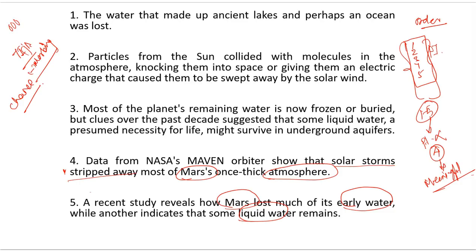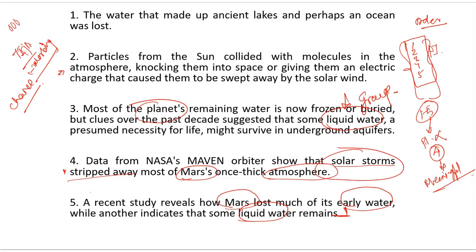So some sentences can be grouped. Mars lost its atmosphere, storm happened, water discussion continues. Number two says: 'Particles from the sun collided with molecules in the atmosphere, knocking them into space or giving them an electric charge that caused them to be swept away by the solar wind.' So particles from the sun — this connects back to the solar storm mentioned earlier, explaining the mechanism of how atmosphere was stripped. This fits well with the Mars/atmosphere group.